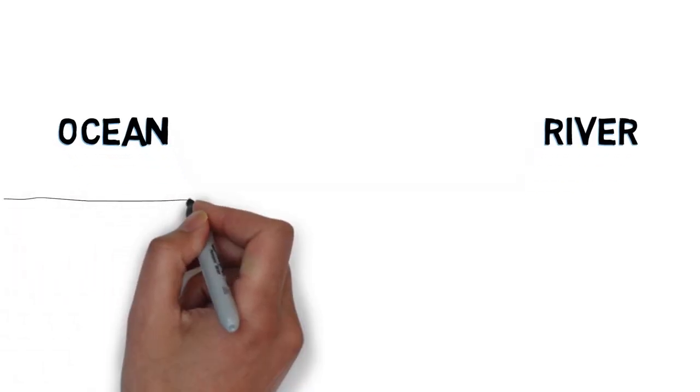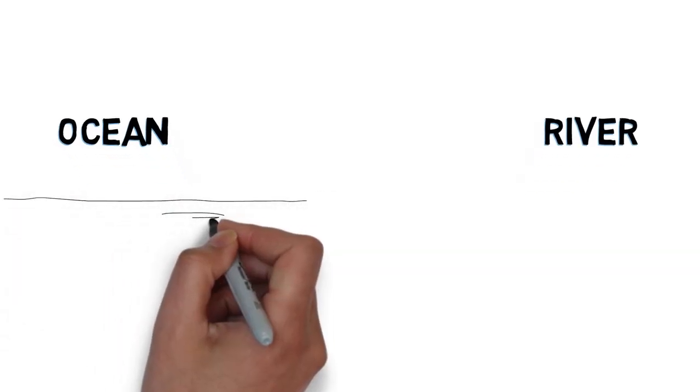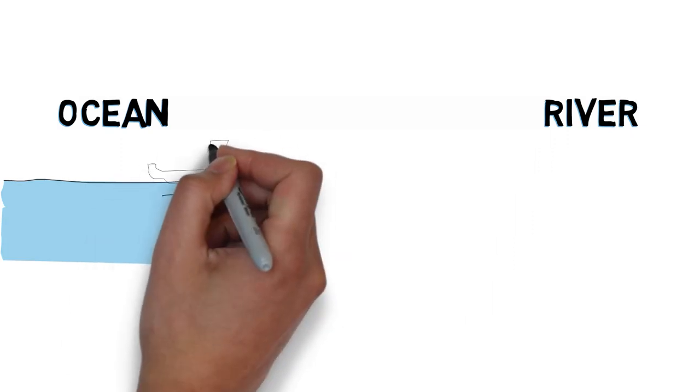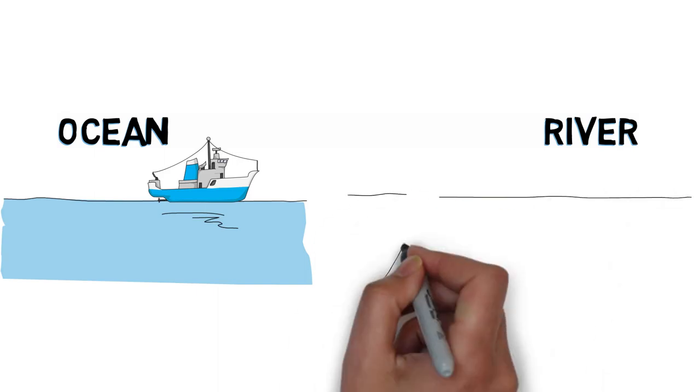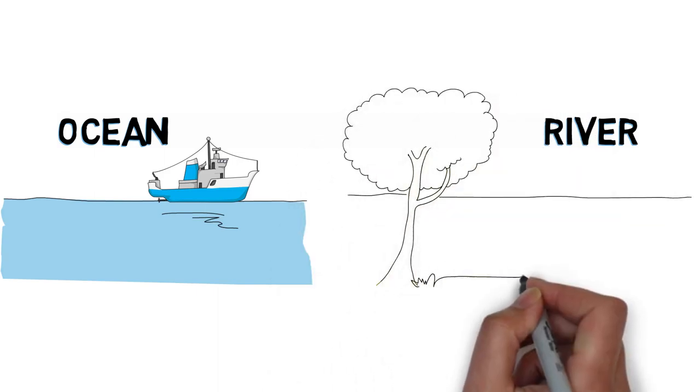ocean water is different from fresh water, which we find in lakes, ponds, and rivers. Ocean water has salt dissolved in it. Salt has small particles called ions that surround the water molecules and keep them from sticking together to form ice.